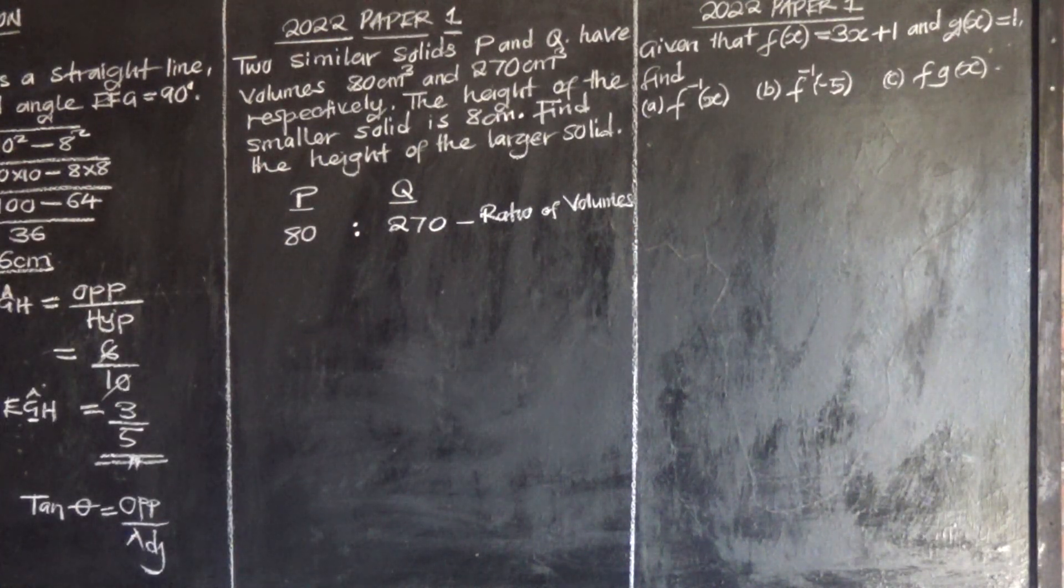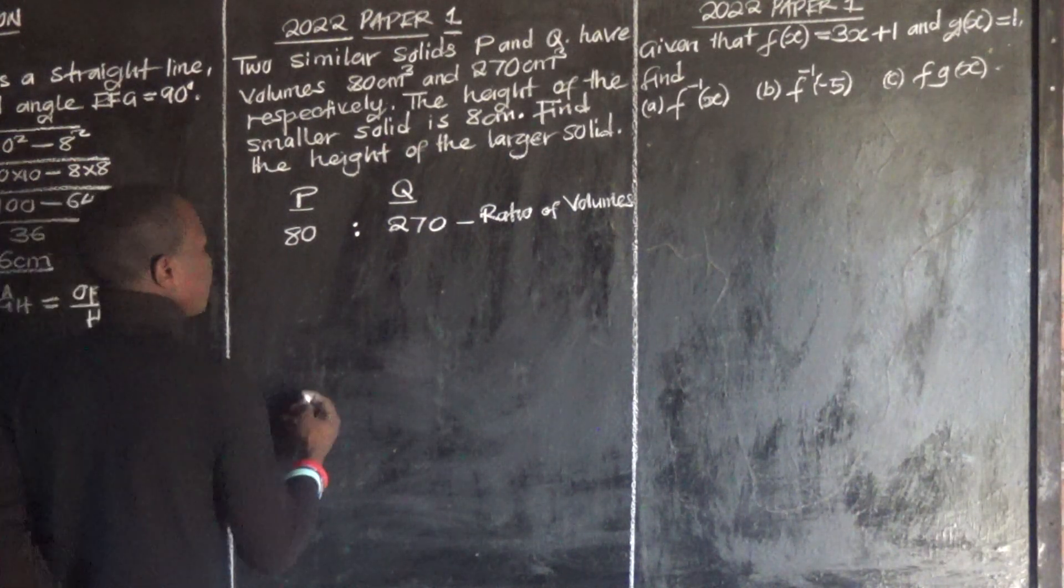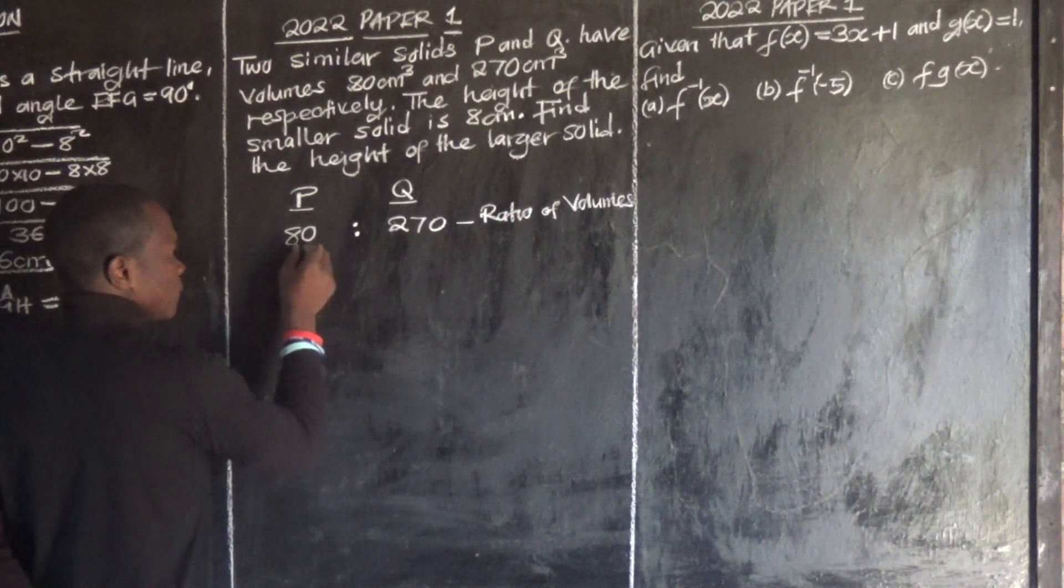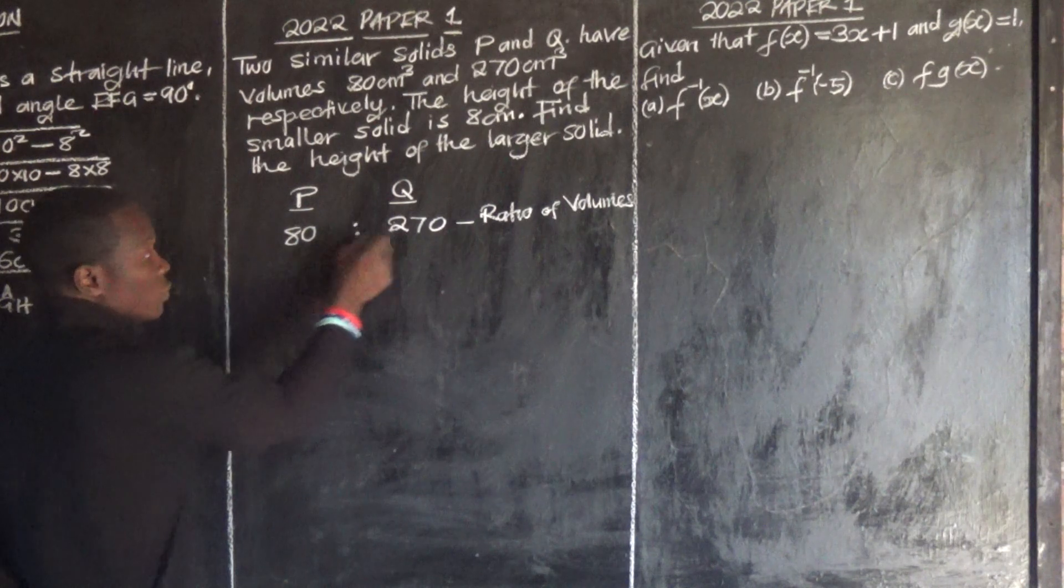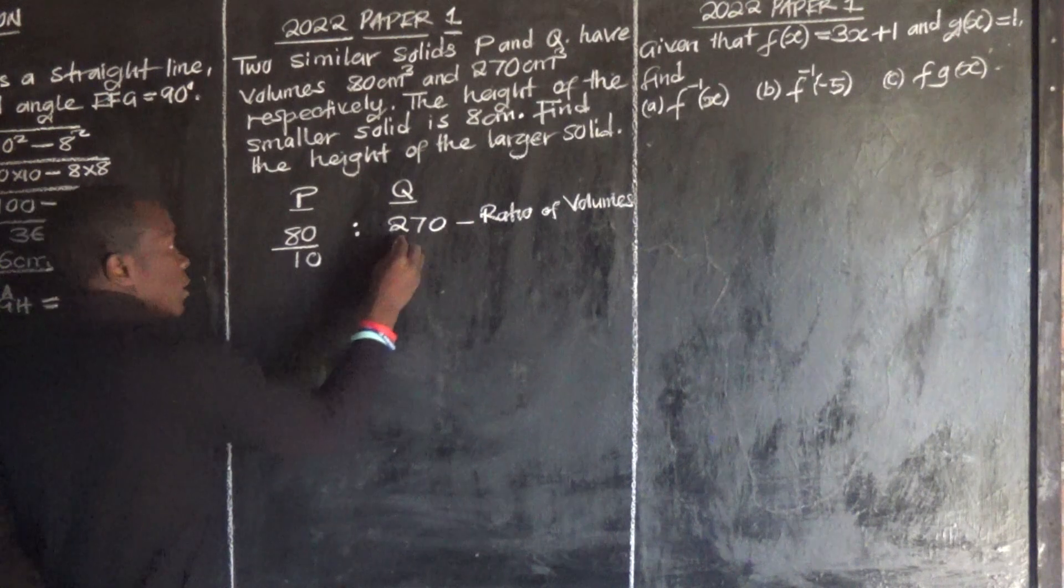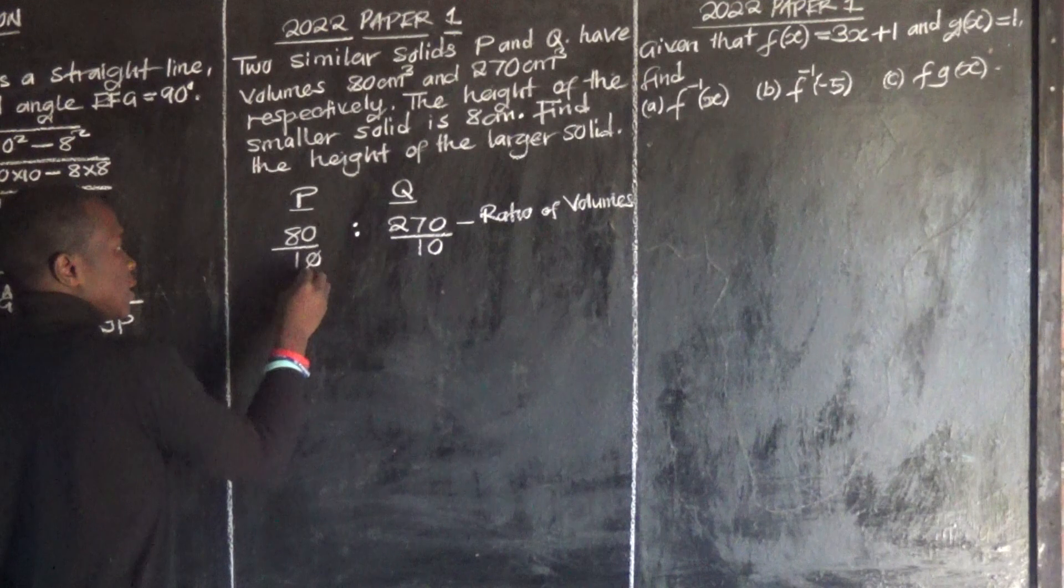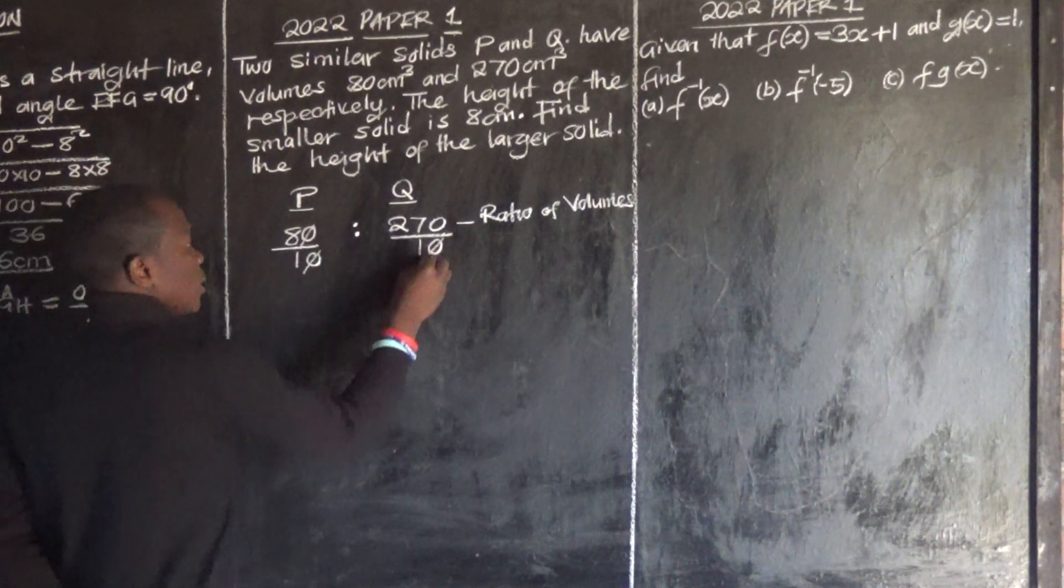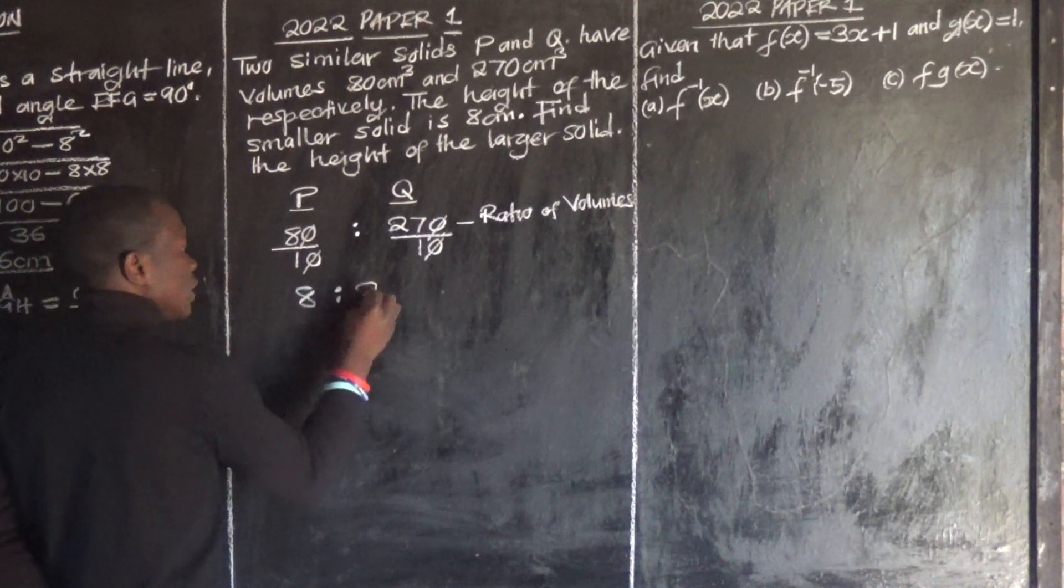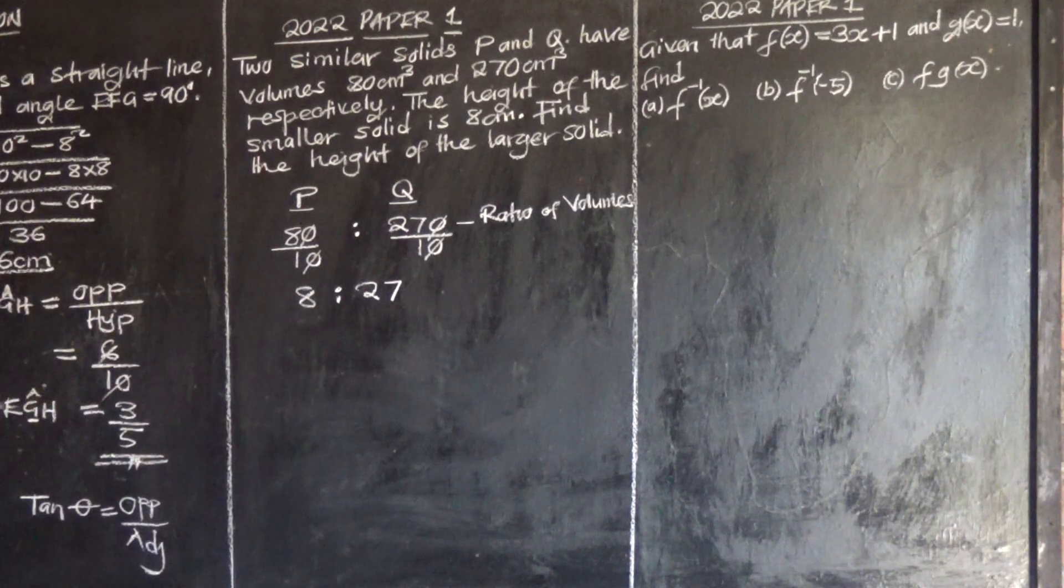So we can now reduce this. Which number can go? Let's get 10. 10 can go into 80 and also into 270. So dividing by 10, I am just reducing. So we get 8 to 27. We just reduced the ratio.